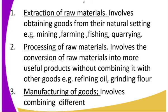Number two is the processing of raw materials. This is a secondary process. It involves the conversion of raw materials into more useful products without combining it with other goods. Examples include refining oil and grinding flour. Industries process the raw materials — farm products, mining products — all that is under processing of raw materials.